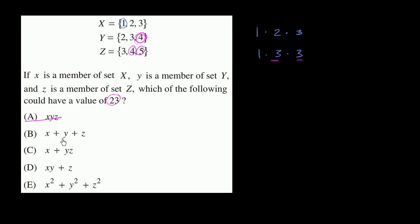Now let's think about x plus y plus z. Can we make that equal to 23? So 23's a lot larger than these numbers. Let's see if we can pick the largest number in each of these sets and see if we can get to 23. So 3 plus 4 plus 5. These are the largest members of each of those sets, and this still only gets us to 12. So there's no way we're going to be able to get to 23.